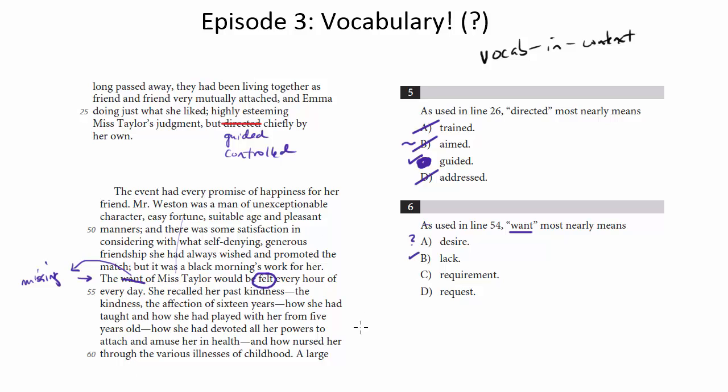So we like choice B, actually, for that reason. So desire, be very careful. It's a trap choice. It's not just that she desires Miss Taylor to be there, but that they're talking about how her absence, that's another good word here, absence, how her absence will be felt every hour. I think that's actually a really good word.